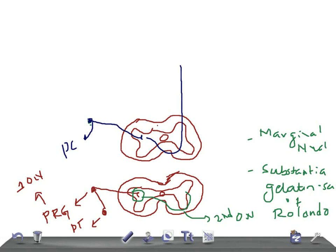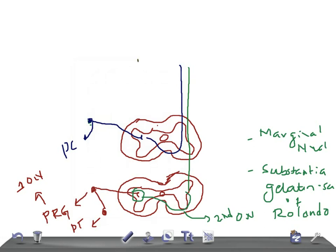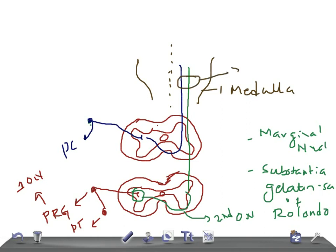They run in the same direction. Let me draw the thalamus. They reach the medulla, and here they form what is called the spinal lemniscus. So all the fibers pass through the medulla, pons, midbrain, and reach the thalamus along with the fibers of the anterior spinothalamic tract.